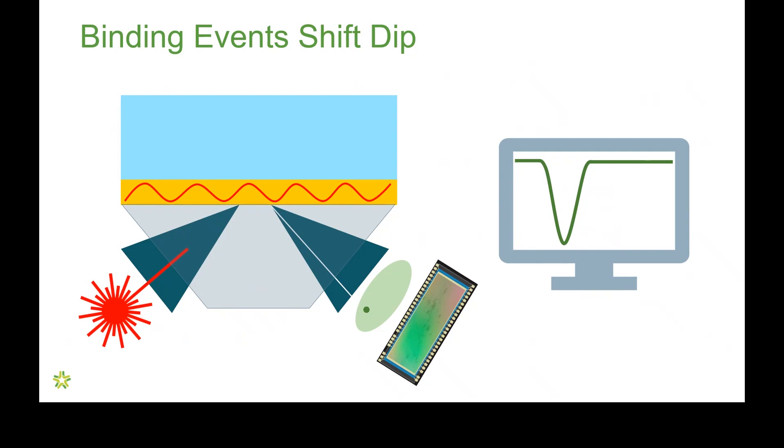For monitoring binding events, the exciting thing is that binding events also shift this dip. For example, if we attach ligands to the gold surface, the dip minima move to a higher angle. And then move even farther across this screen when analytes bind to the ligands. So, we can monitor how the analytes bind to the ligands and also how they unbind or dissociate from the ligands by tracking where that dip minimum occurs across the range of angles.